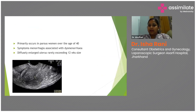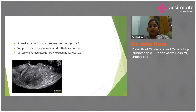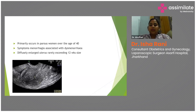Adenomyosis primarily occurs in parous women over the age of 40. Symptoms include menorrhagia often associated with dysmenorrhea. The uterus is diffusely enlarged, rarely exceeding 12 weeks size. On imaging, there is gross hyperplasia of the myometrium and the endomyometrial junction is not clearly seen — these are subtle points helping the radiologist differentiate adenomyosis from myometrial hyperplasia.